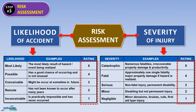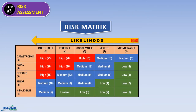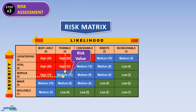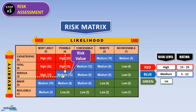When making an assessment of likelihood and severity, decide which category most closely describes each factor by referring to the rating tables. Each category is assigned a different rating. A risk matrix defines the level of risk by considering the category of likelihood against the category of severity. The risk value is determined by multiplying the likelihood and severity scores together. The higher the risk value, the greater the overall risk. Risk levels are labeled with three colors: red represents high risk (rating 15–25), blue represents medium risk (rating 5–12), and green represents low risk (rating 1–4). High risk requires immediate action, while low risk is considered acceptable and needs no further action.